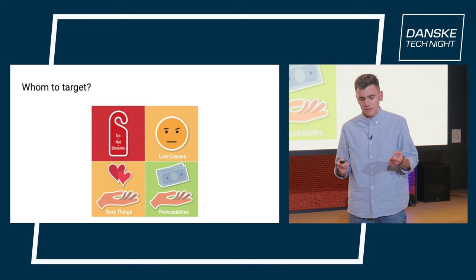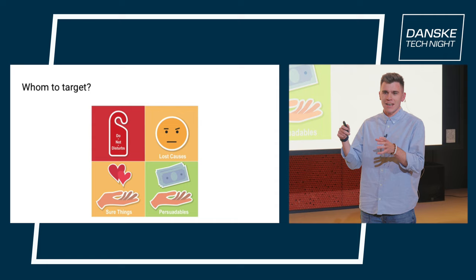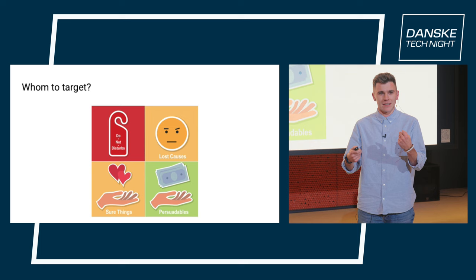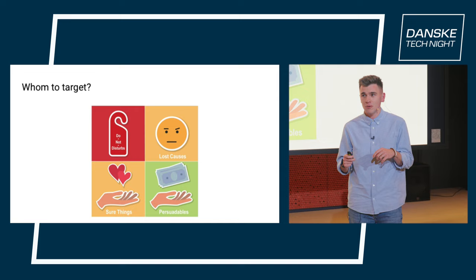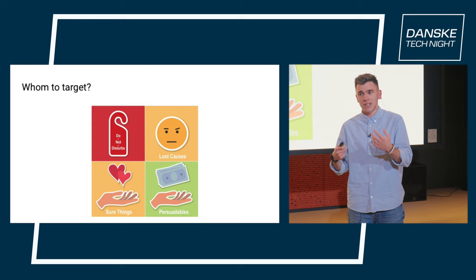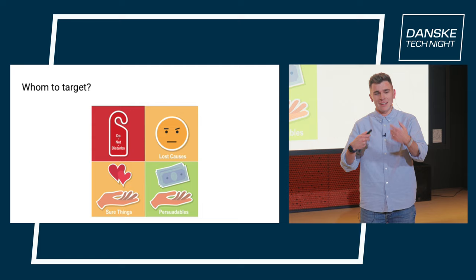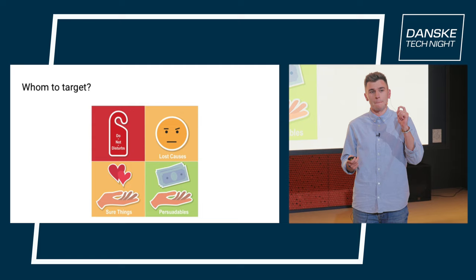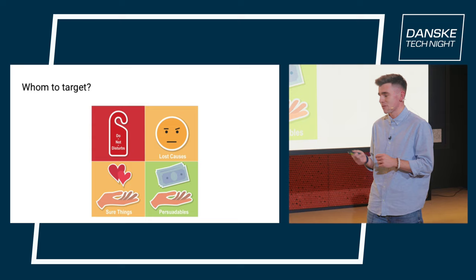In the scope of uplift modeling, there are usually four types of users. You're most interested in the persuadables — those who are otherwise not willing to stay, but when you give them something, they say 'cool, I'll stay.' Then there are lost causes: those who would have been persuadables but didn't receive any treatment, so they left. We want to move users from that quadrant. The best group is the sure things — your most loyal customers who will stay regardless, so you don't need to give them any discounts.